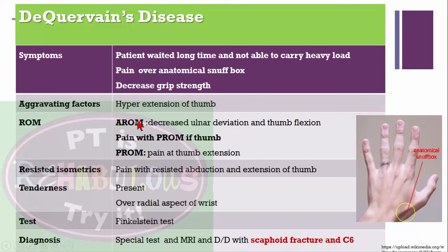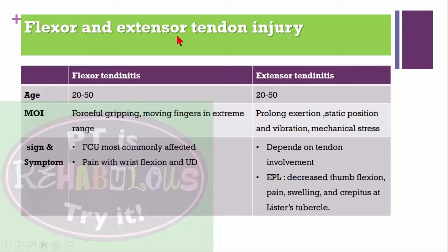In De Quervain's disease, pain is on the anatomical snuff box. In scaphoid fracture, pain is on the radial side of the wrist near the anatomical snuff box. In C6 radiculopathy, signs and symptoms involve muscle dysfunction toward the second metacarpal bone. Now, flexor tendinitis: most common in ages 20 to 50 years, caused by forceful gripping or moving fingers through extreme range of motion.